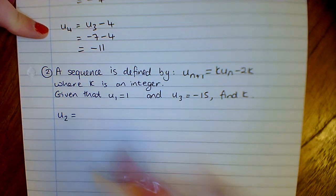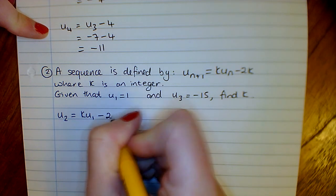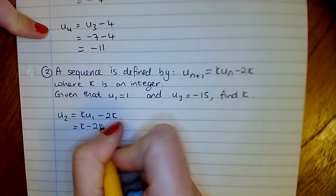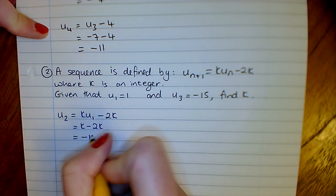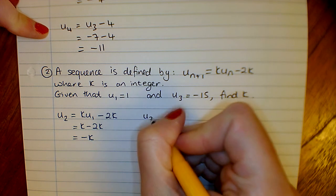So we get our second term by saying it's k times our first term, minus 2k. We know our first term is 1, so that's just k minus 2k. So that gives us minus k.